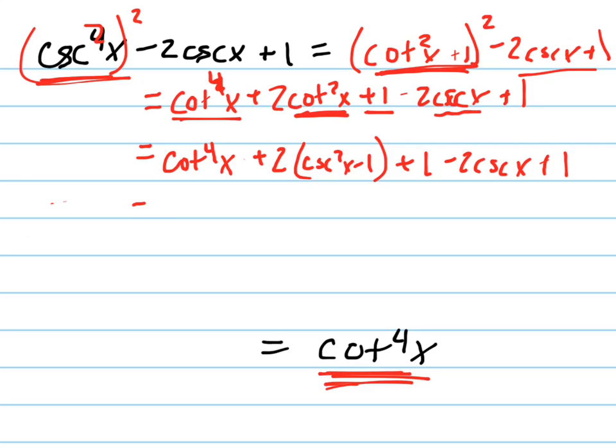Hopefully I did everything right there. That equals cotangent to the 4th x plus, I'm distributing. 2 cosecant squared x minus 2 plus 1 minus 2 cosecant x plus 1. And now notice what happens here, changing colors.